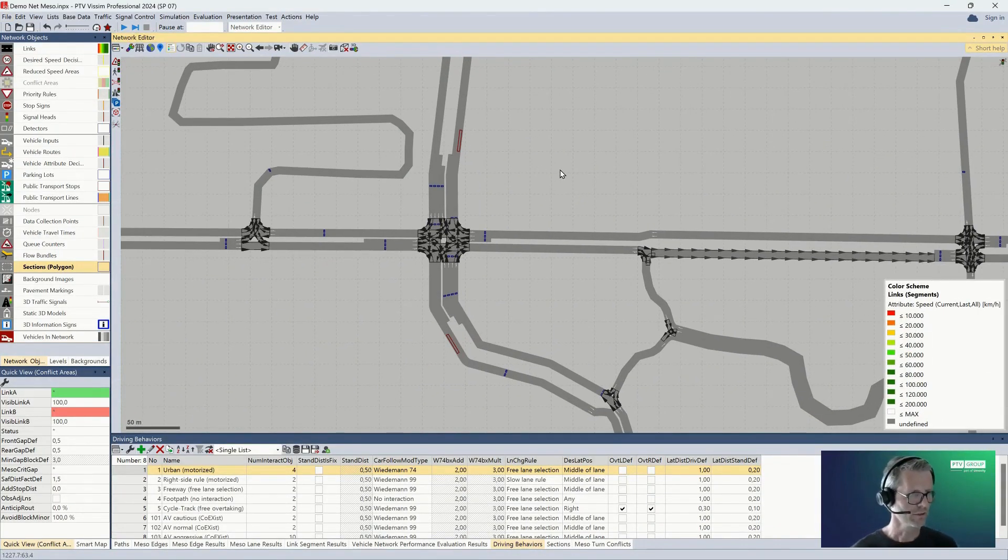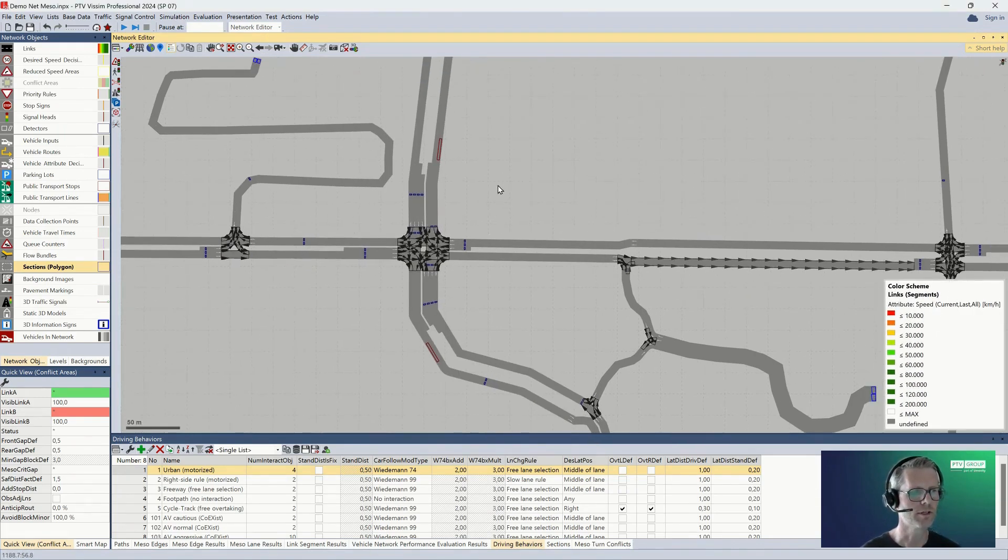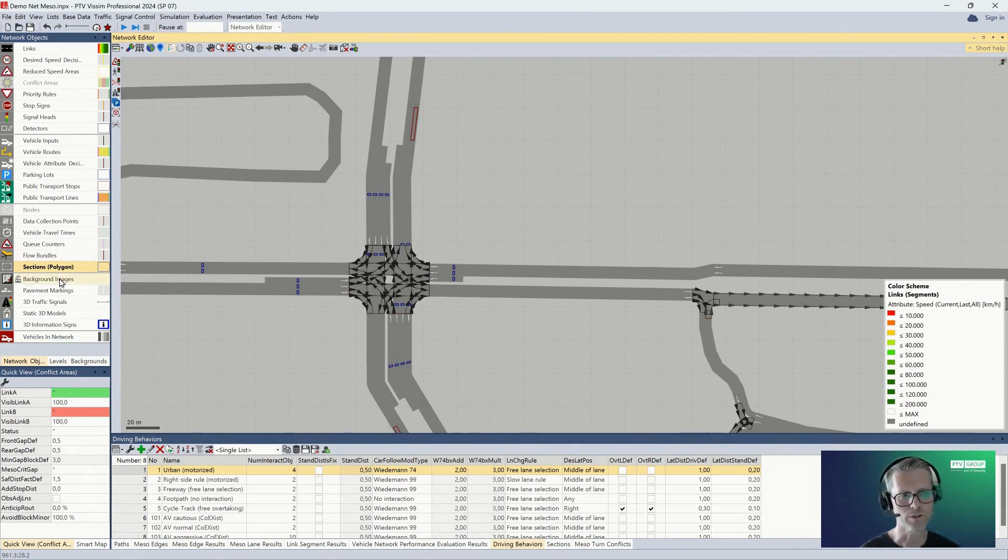So let's take a look into this. If you go to simulation and parameters, then you can choose if you want to run in micro or in meso. If you want to do some hybrid simulation, then you would need to define a section.